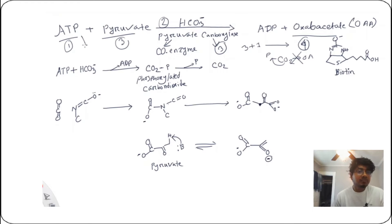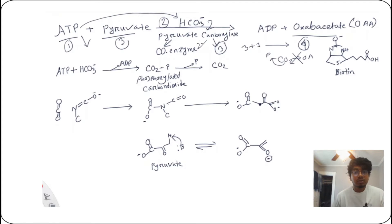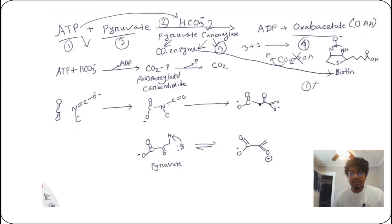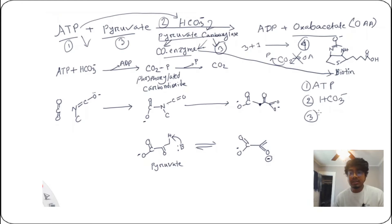We need ATP to activate that bicarbonate, and this bicarbonate will react with pyruvate carboxylase. I also need a coenzyme for this reaction — specifically biotin. So to summarize, I need ATP, bicarbonate, the enzyme pyruvate carboxylase, and biotin as a coenzyme.